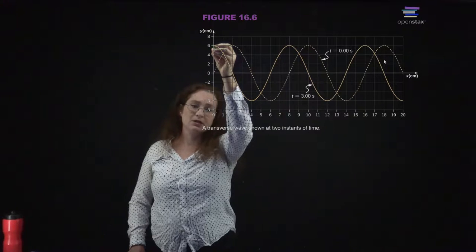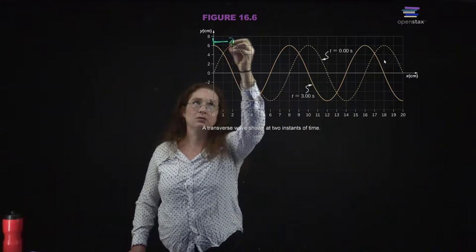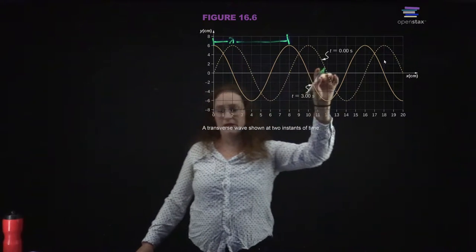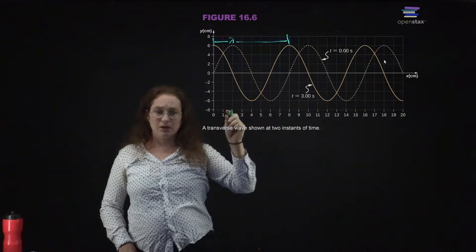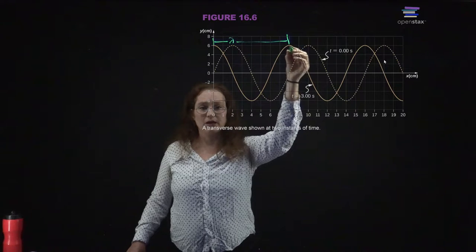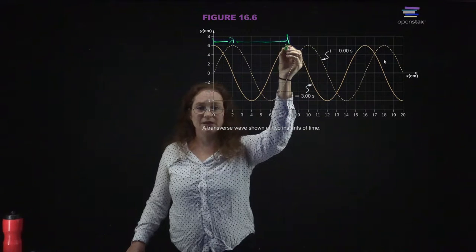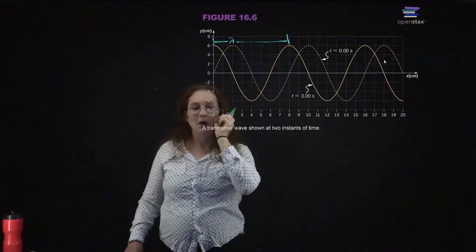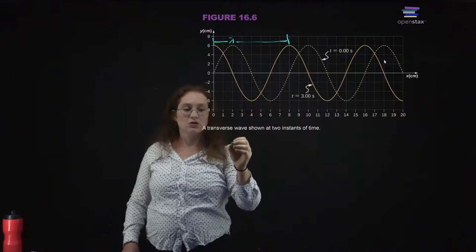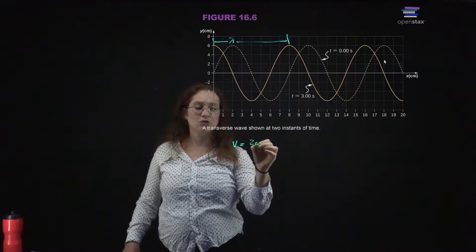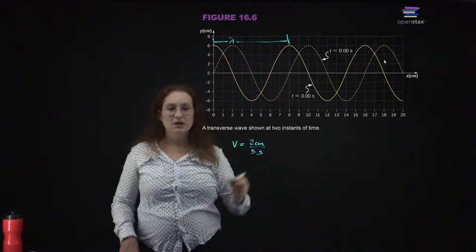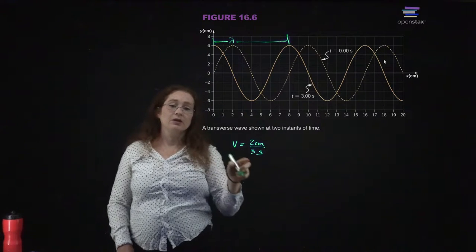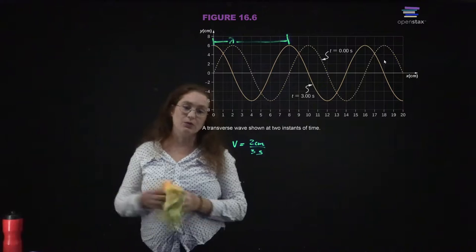You have the spatial properties — you can define the wavelength from peak to peak. If you want the speed, and if the wave is traveling in a given direction, you can measure how far it traveled in a given time. For instance, if it traveled two centimeters in three seconds, the speed is two centimeters per three seconds. Note that you're not always told which direction the wave is traveling. You can read these types of properties of a wave off the graph.